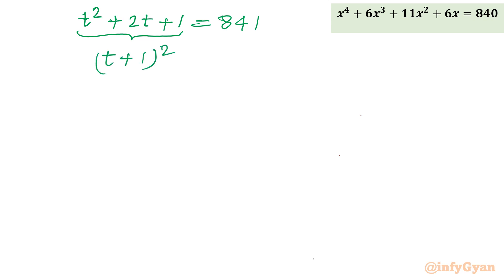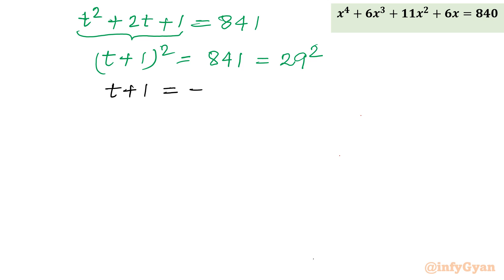I added 1 to both sides because the left-hand side is now a perfect square: (t + 1)². The right-hand side is 841, which is 29 squared. Taking the square root of both sides gives t + 1 = ±29.